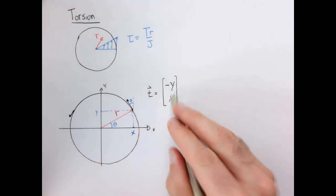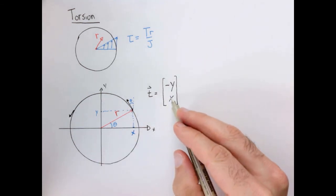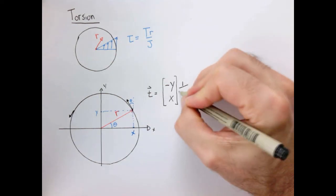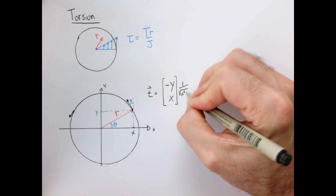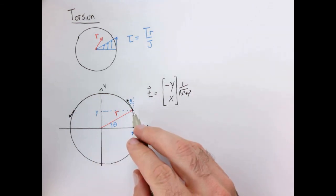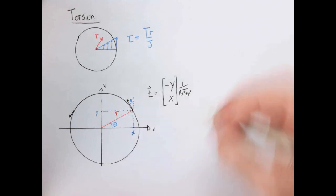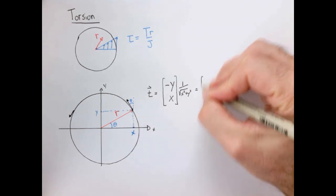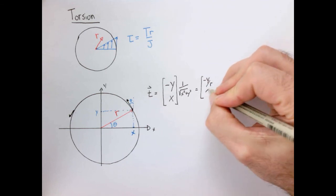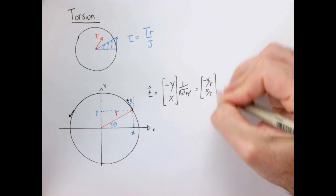This isn't a good tangent vector because it's not normalized — the magnitude depends upon how far we are from the origin. So we need to normalize it so the magnitude is 1. We divide by the square root of x squared plus y squared, which is also equivalent to r, the radial distance from the origin. So our tangent vector is simply (-y/r, x/r).